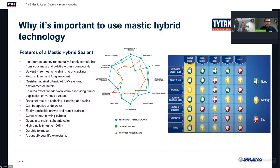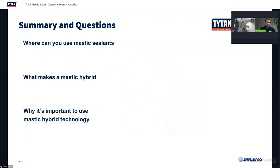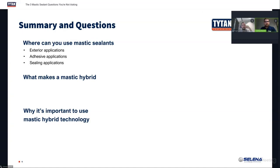Now for a quick summary of the three questions we just went over. Where can you use mastic sealants? As you saw, you can use them in exterior applications, for adhesive applications, for sealing applications. It really comes down to whether there are regulatory limitations or specific standard testing the product has to meet — otherwise you can use it just about anywhere.